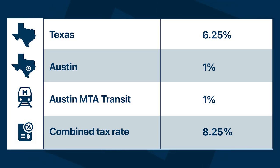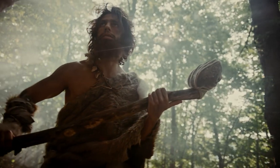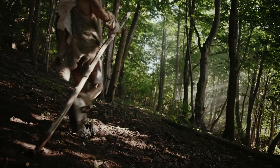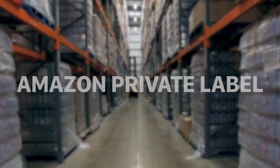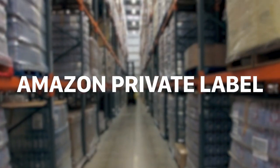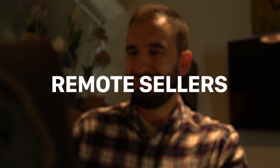For example, take a look at the combined tax rate for Austin, Texas. El Paso, Texas collects sales tax at a combined rate of 7.25%. All of sales tax for states was initially set up before the internet and before online entrepreneurialism like Amazon private label even existed. And then it became the opportunity it is today, increasing the number of remote sellers.